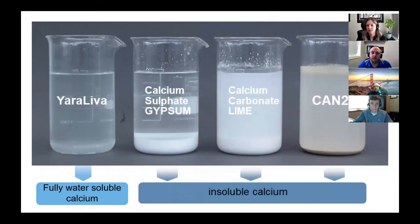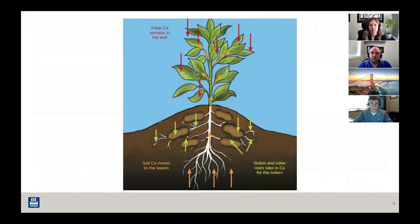If we flood that area with water soluble calcium, we can realize these benefits that we're speaking of. Feeding the main roots does not bring increased levels of calcium necessarily into the stolen tuber zone, which is what we're looking to do. So that's the basics on timing and placement.